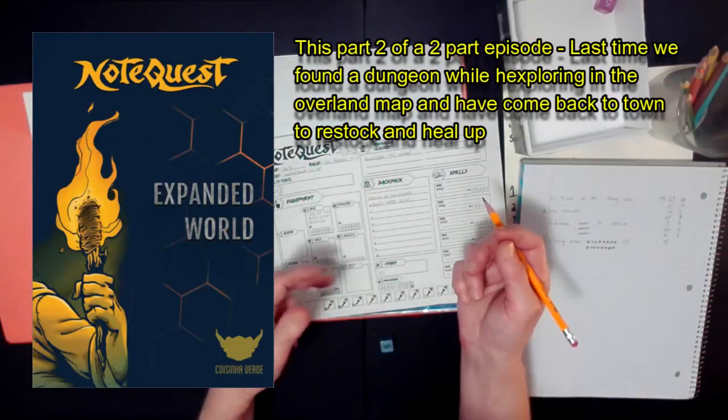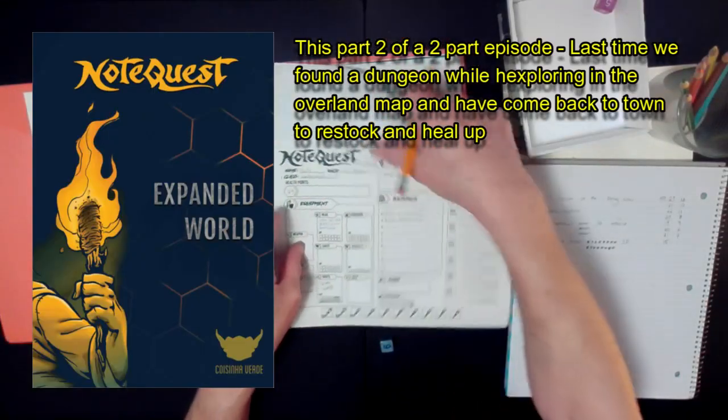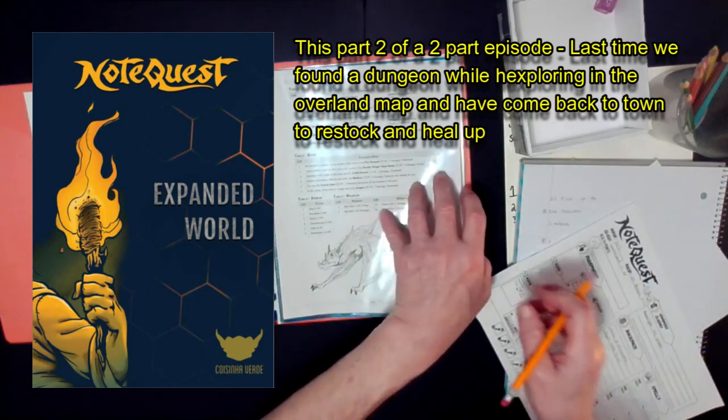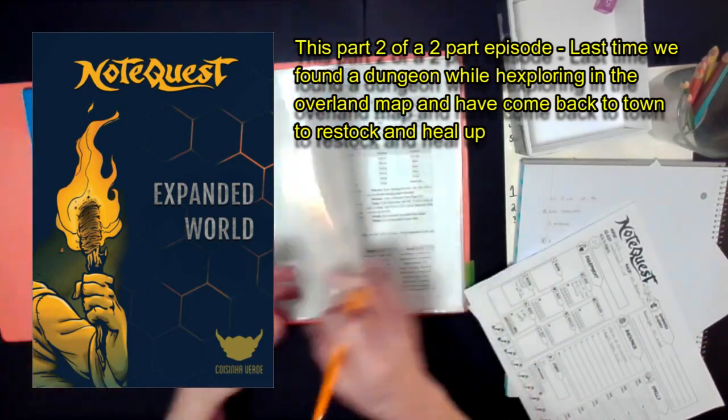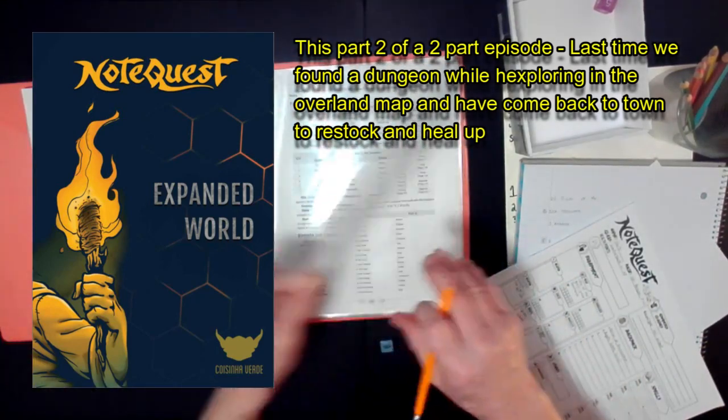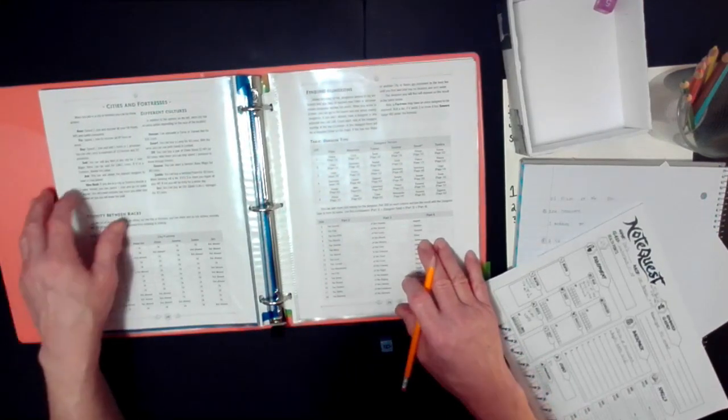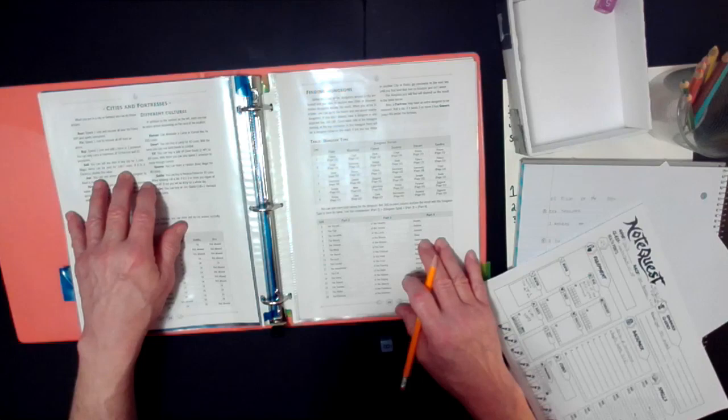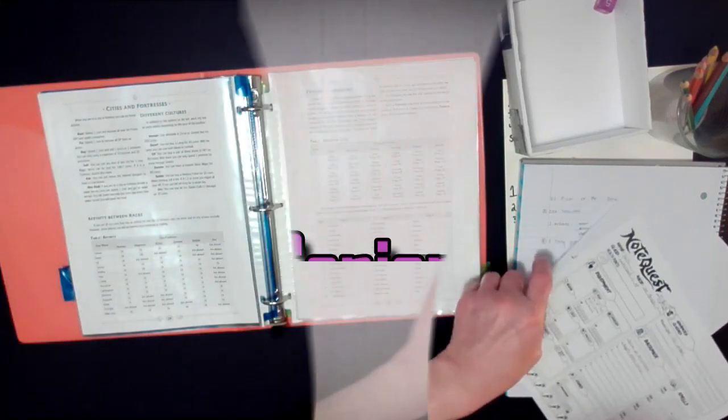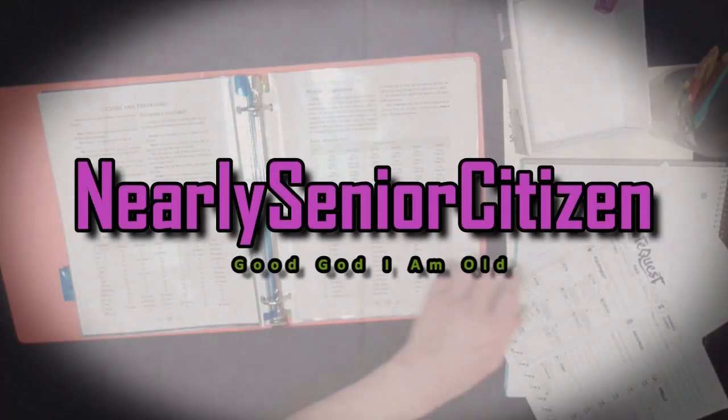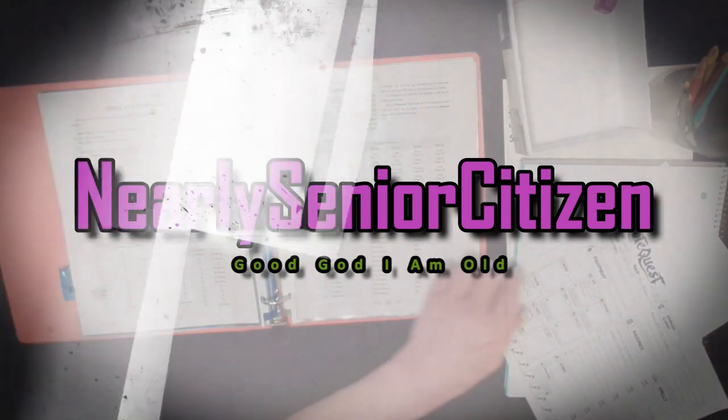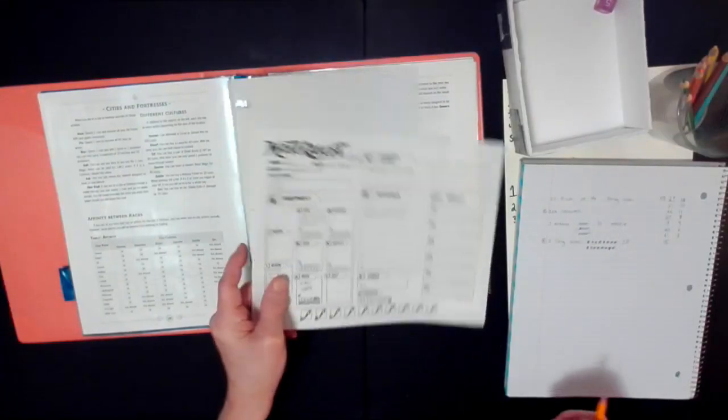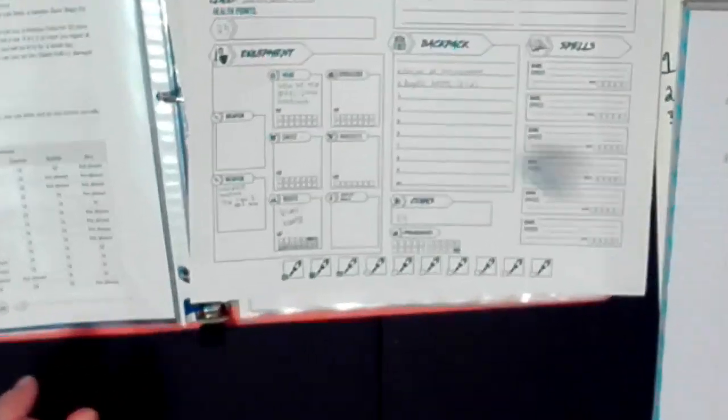I am going to sell the angelic boots. When you sell things in town, you look up town things. You can sell any item in any city for one coin. Magic items sell for 1d6 minus 1. The angelic boots will sell for 1d6 minus 1.